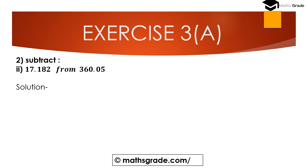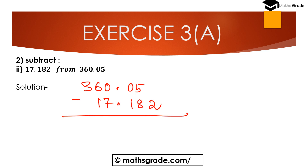Now question number 2, second bit: subtract 17.182 from 360.05. We compute 360.05 minus 17.182. We need to add a zero in 360.05 to make it 360.050. Subtracting 2 from 0 is not possible, so we carry 1 from the 100th place, which is 5.